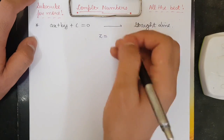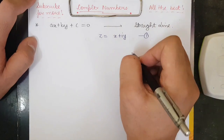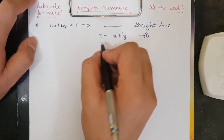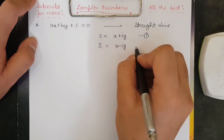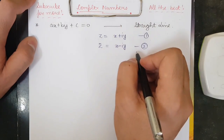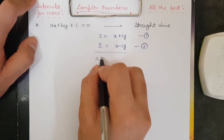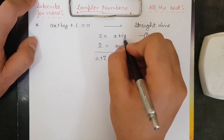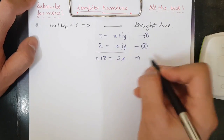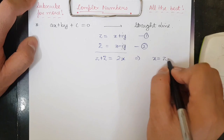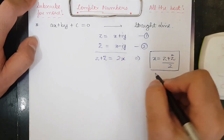We know that any complex number z equals x plus iota y — call this equation (1). The conjugate z̄ equals x minus iota y — call this equation (2). Adding both equations gives z plus z̄ equals 2x, so x equals (z + z̄) / 2. This is a very important relation.